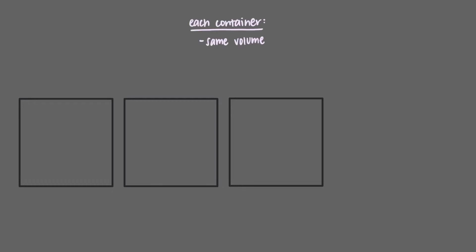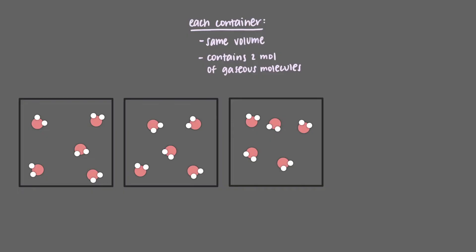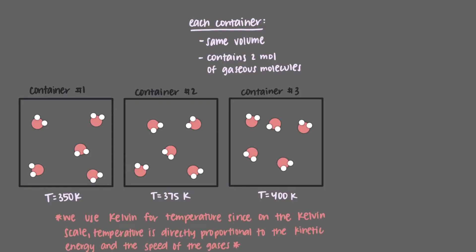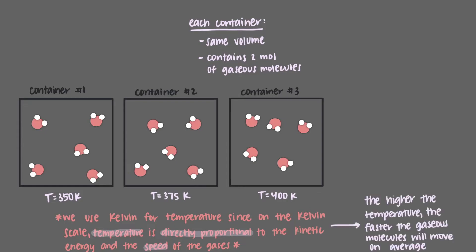First, we'll talk about temperature. Let's take a look at these three identical volume containers. Each of them are the same size and contain two moles of gaseous molecules. However, the first container has a temperature of 350 Kelvin, the second has a temperature of 375 Kelvin, and the third has a temperature of 400 Kelvin. We'll use Kelvin since on the Kelvin scale, which starts at zero Kelvin — absolute zero — temperature is directly proportional to the kinetic energy and speed of the gases. A higher temperature means a higher average kinetic energy, so the higher the temperature, the faster the gaseous molecules will move on average.